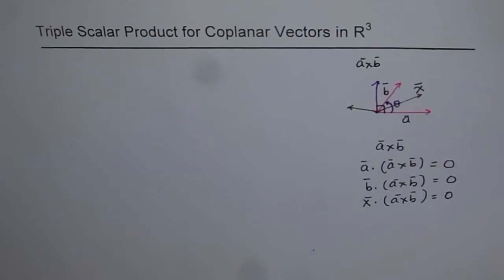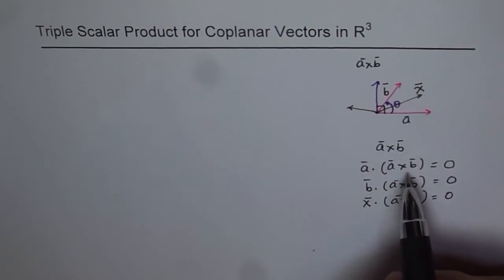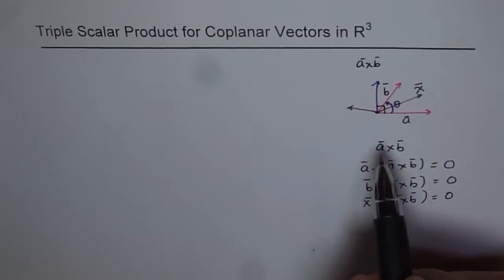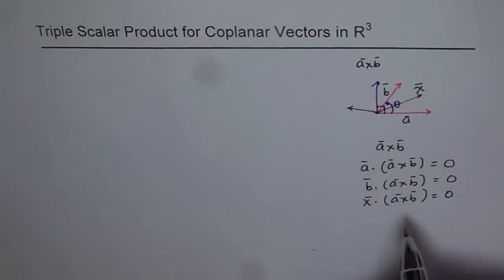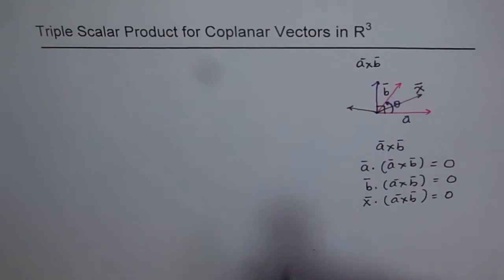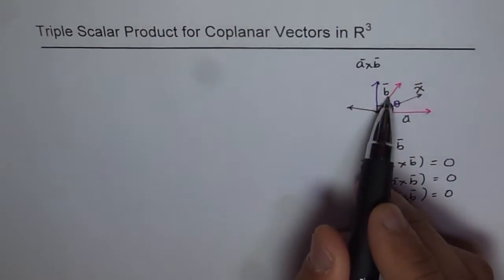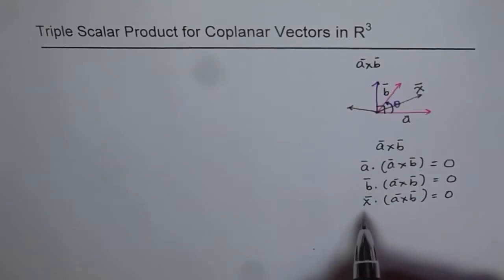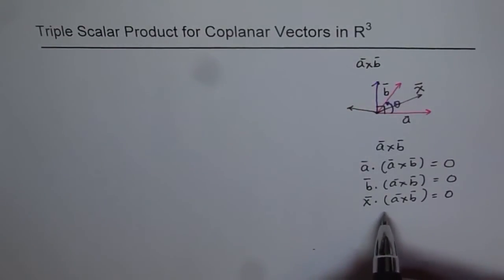Therefore, the dot product of those vectors with A cross B will be zero. So we say that all the vectors which are in the same plane as A and B will have that dot product as zero. This is a very important property. So we call this scalar triple product.